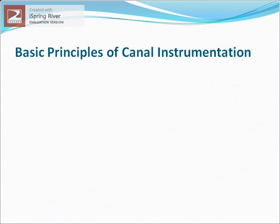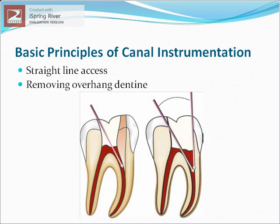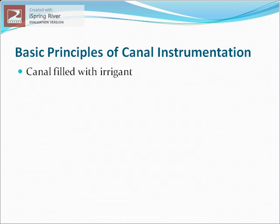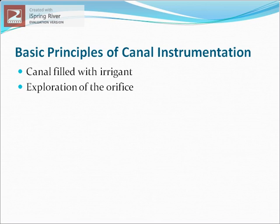The basic principles of canal instrumentation include: there should be a straight-line access to the canal orifices, achieved by removing any overhanging dentine lying close to the canal orifices. Files are always worked within a canal filled with irrigant; irrigation solution should always be used during instrumentation to remove cutting debris and keep the canal wet. Exploration of the orifice should always be done with a smaller-size file.